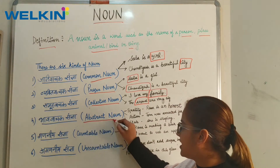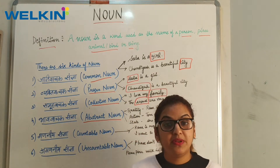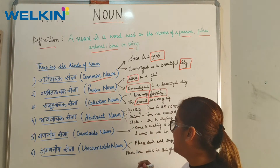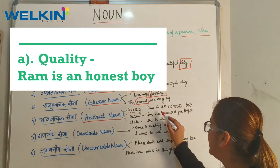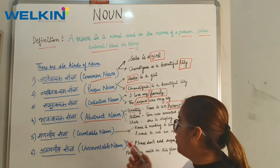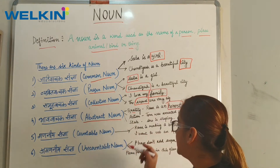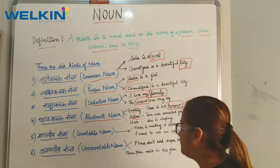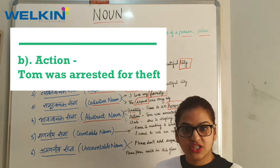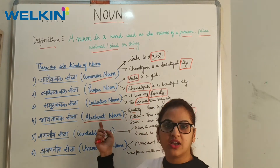Next is Abstract Noun. Abstract Noun ko Hindi mein kehte hai Bhav Vachak Sangya. Abstract noun mein aap apni feelings batate hain. Iske andar teen categories hain. First is Quality — example: Ram is an honest boy. The quality here is honesty — that is his quality, so it becomes an abstract noun. Second is Action — example: Tom was arrested for theft. 'Theft' is an action — so it is an abstract noun.